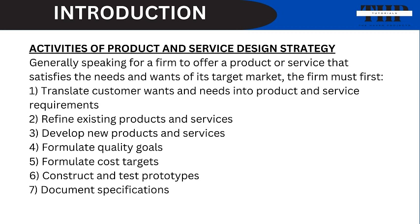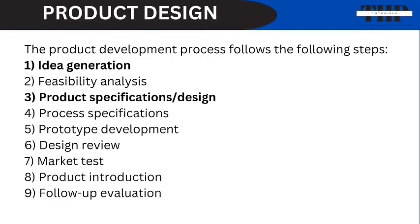Let's talk about product design. In order to understand what product design is all about, let's first have a look at the product development process. The product development process follows these steps: idea generation, feasibility analysis, product specifications, process specifications, prototype development, design review, market test, product introduction, and lastly, follow-up evaluation.